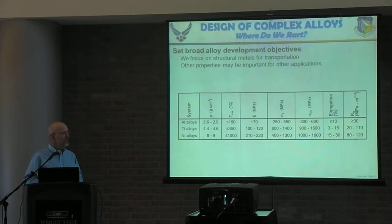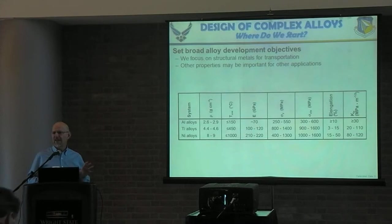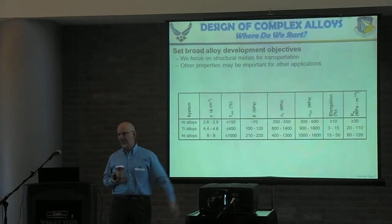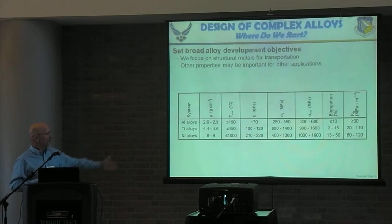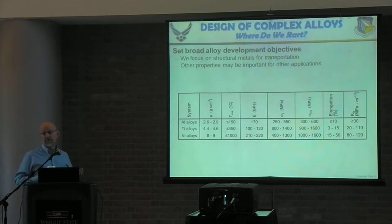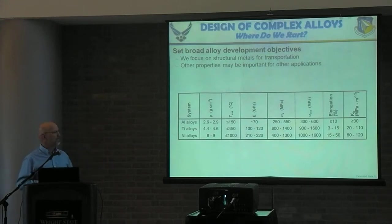We're trying to design new alloys — not randomly making alloys and seeing what we get. We're trying to produce a balance of properties for an intended application. My bias is structural materials for transportation. That will dictate which properties are important. I show here the standard palette for transportation and aerospace in particular: aluminum alloys, titanium alloys, nickel alloys. The most important things are density and melting temperature. If the part moves or the system moves, density matters. To improve efficiency of power conversion, temperature matters.